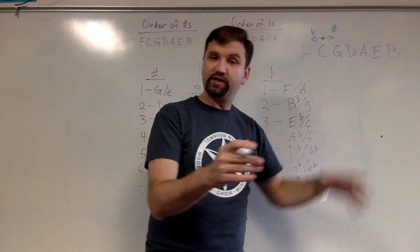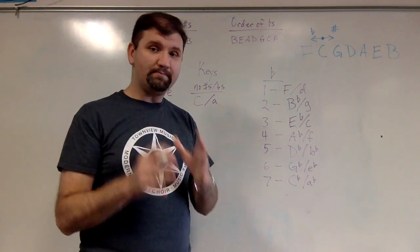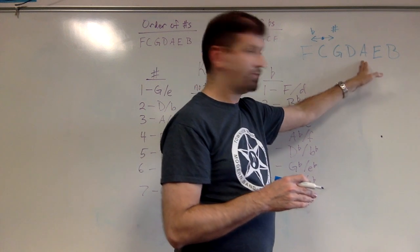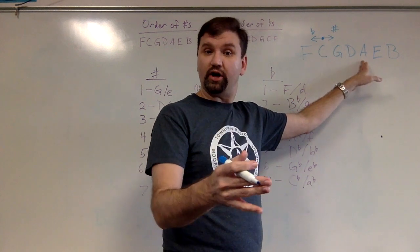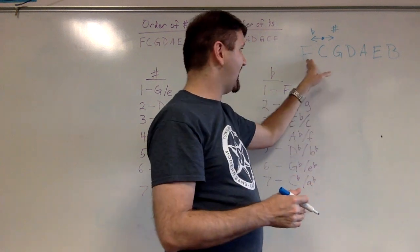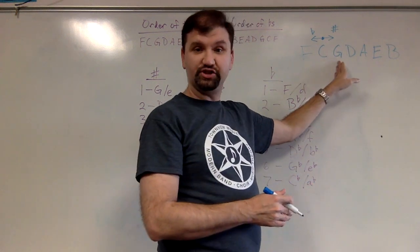So for example, the key of A major has three sharps. And those three sharps are F, C, and G.